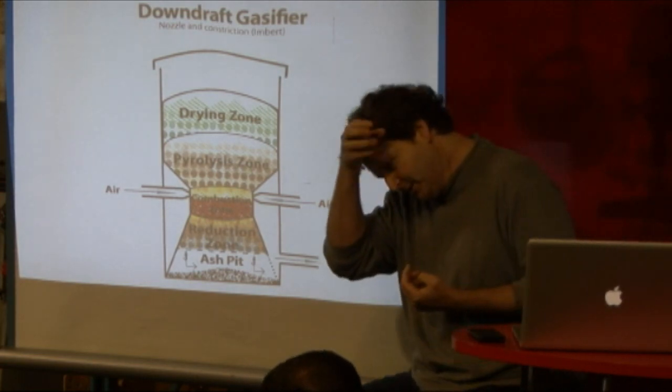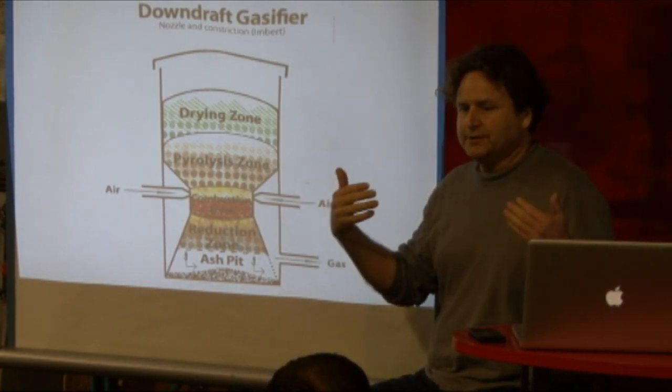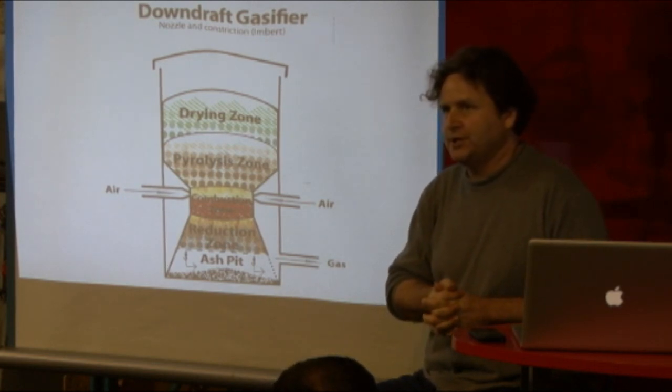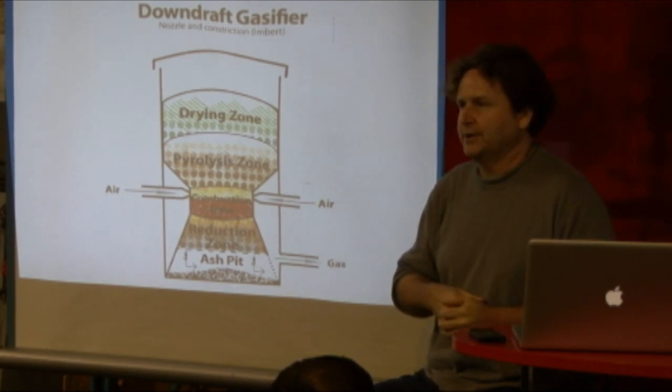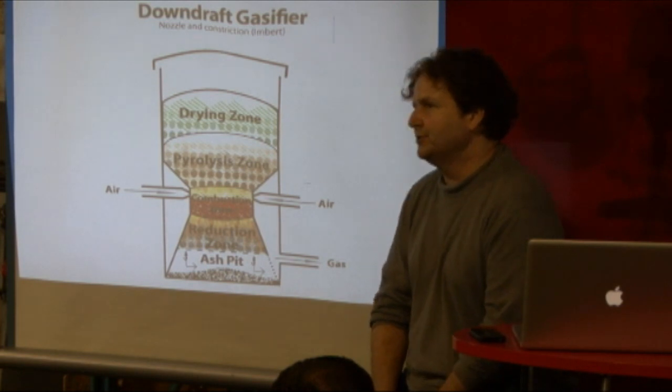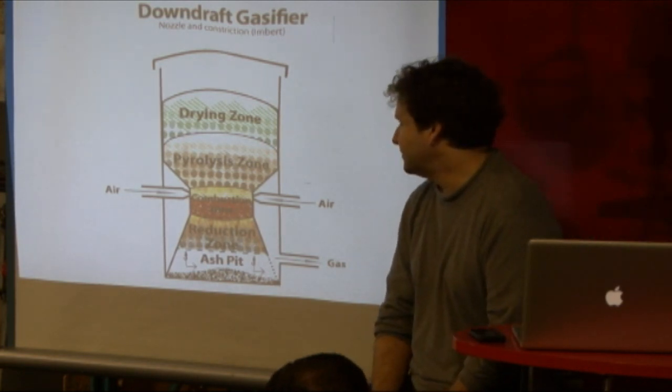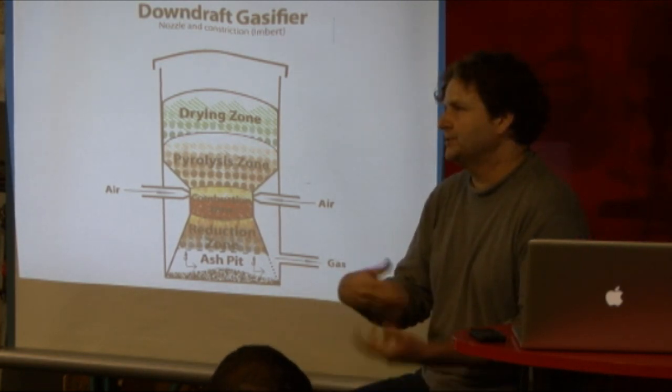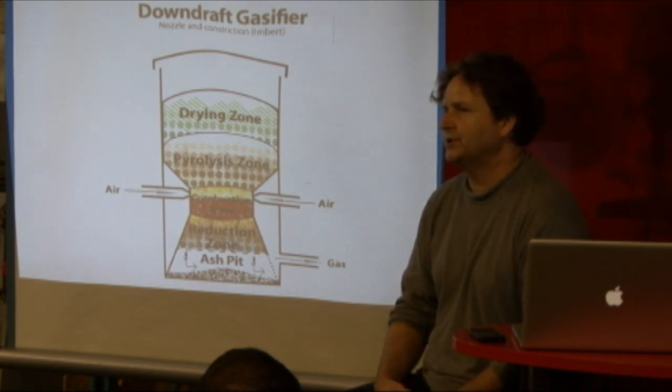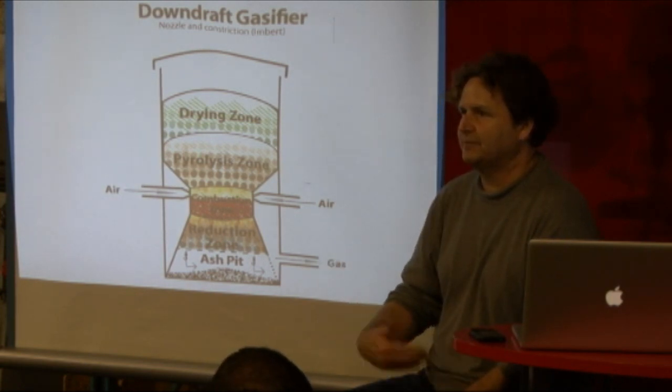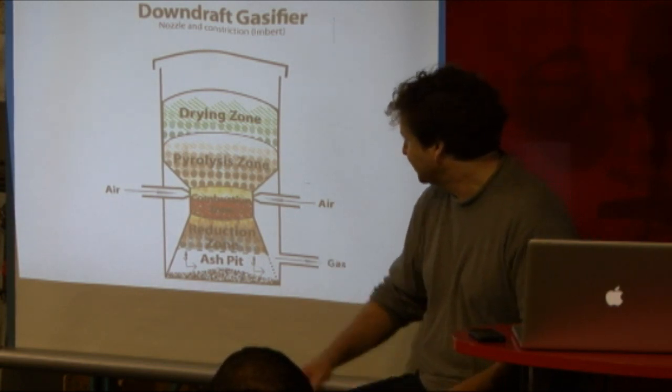The problem in the updraft gasifier is you're getting your tar gases and your steam into your outgoing gas. So, the typical solution for that is what's called a downdraft gasifier, which reverses or moves around some of the zones here, such that you're pulling the gas off right after the reduction zone.